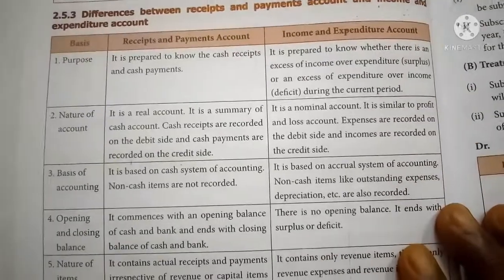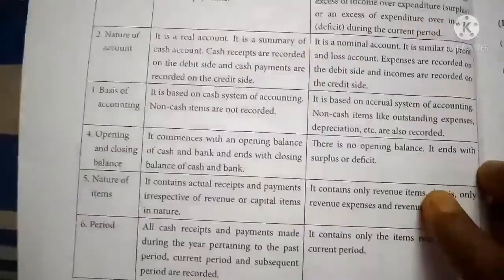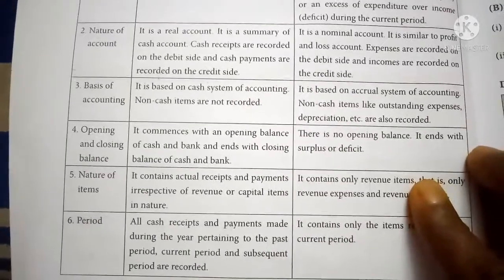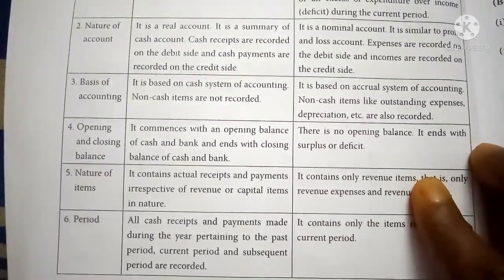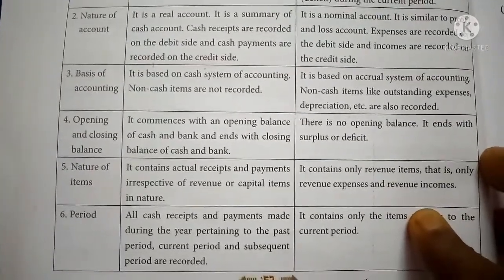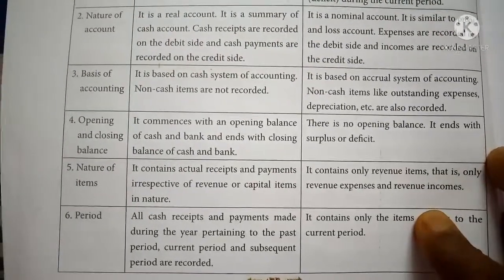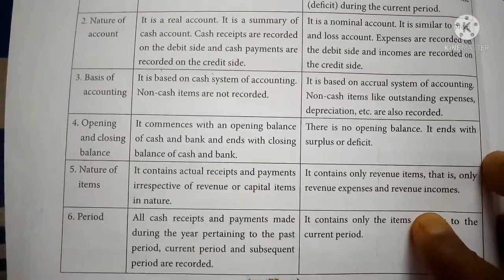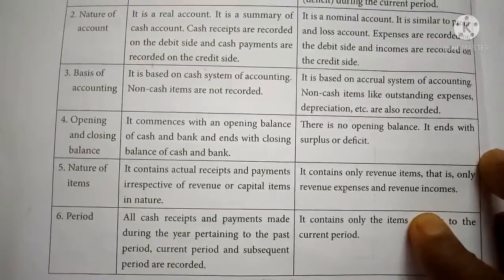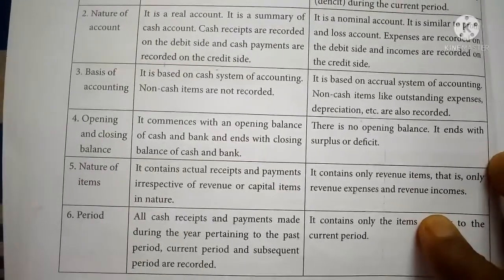Opening and closing balance: The Receipts and Payments account commences with the opening balance of cash and bank and ends with the closing balance of cash and bank. In the case of the Income and Expenditure account, there is no opening balance; it ends with either a surplus or a deficit.